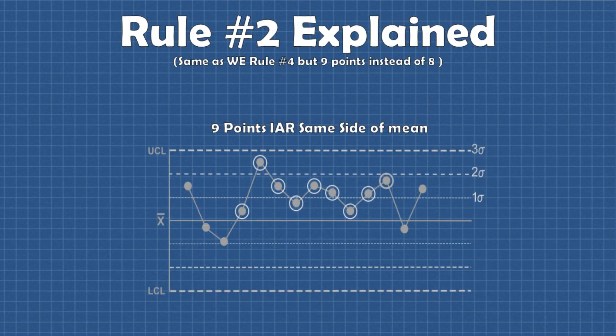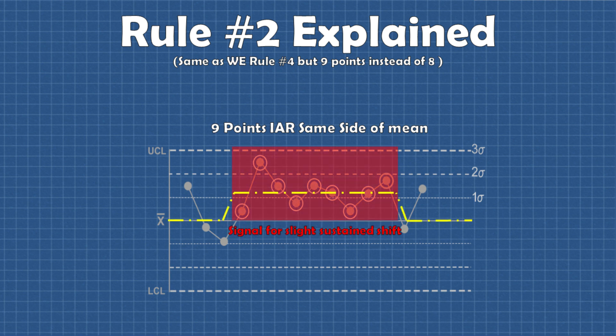Rule number two can be used with rule number one to increase chart sensitivity to small but sustained process shifts. If we have nine points in a row on the same side of the mean we can be pretty sure that the process has shifted even if it's only slightly. There's probably some special cause or change to the process that caused the slight shift.